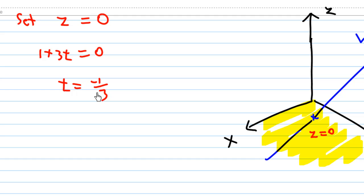Similarly, you can also find when the line intersects the yz-plane by setting x = 0, and when the line intersects the xz-plane by setting y = 0.